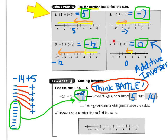Take a look at number four: positive one plus negative one. We start at zero, and positive one tells me to move to the right one. Negative one tells me to move to the left one. So I end up back at zero. So positive one plus negative one equals zero. And using our vocabulary, those are additive inverses, because we've created that zero.